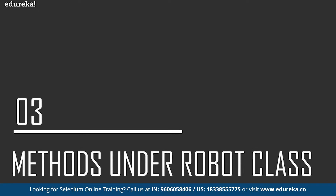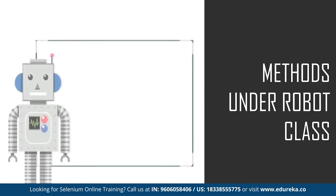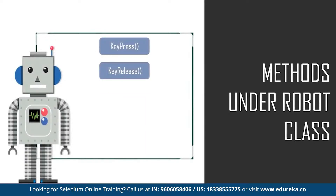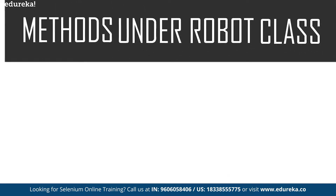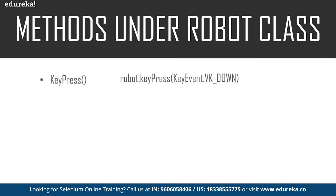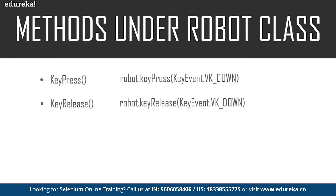Now let's move on to what are the different methods used while working on the Robot class. There are basically five different methods. Since it handles all keyboard and mouse functions, the first method is keyPress, which is used to press any key on the keyboard — for example, pressing the up key. The second is the keyRelease method, which is used to release a pressed key — for example, releasing the caps lock key.